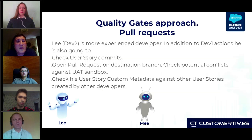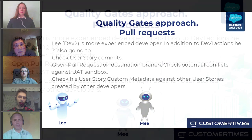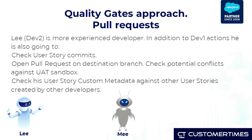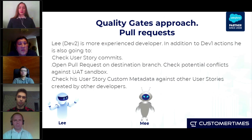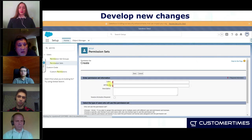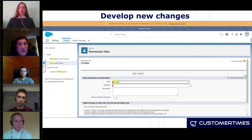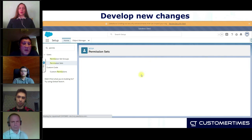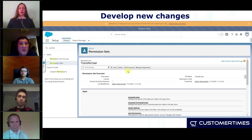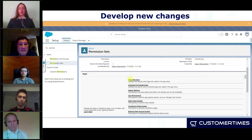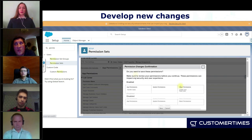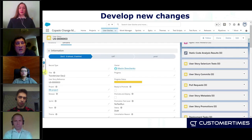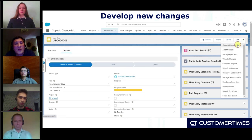We also have another developer — Lee. He is a bit more experienced than Mi. In addition to what Mi has done, Lee is going to check user story commits, open a pull request, and check user story custom metadata in other user stories. Part of his development is going to be exactly the same, with the one difference that he is going to check not Transfer Leads but Transfer Cases. The pull request is a really useful thing, not only for pure developers, but also for consultants who are not code-intensive but do a lot of functional point-and-click changes.